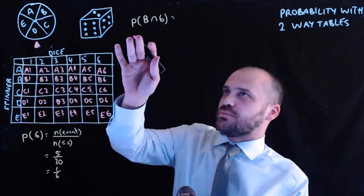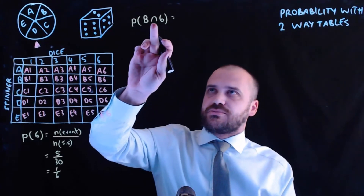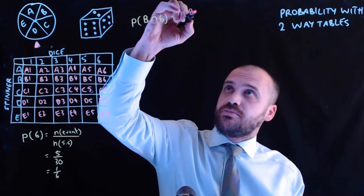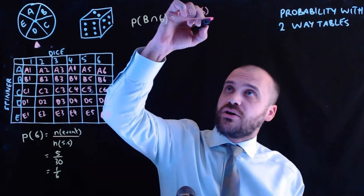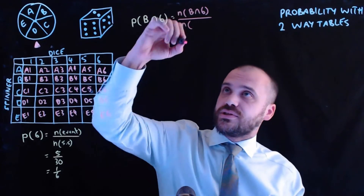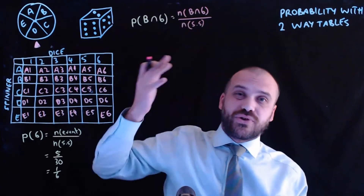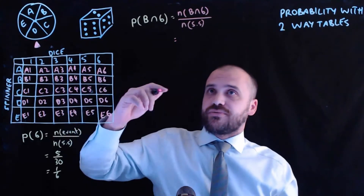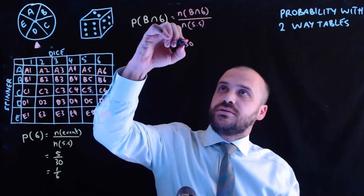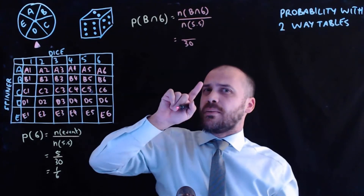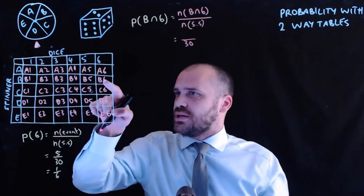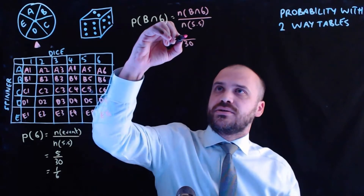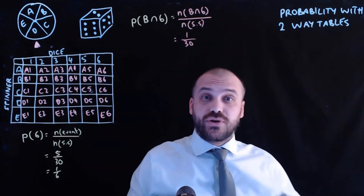Now a more challenging question: the probability of getting a B and a six. Remember, this is the intersection — the 'and'. That's equal to the number of ways to get a B and a six over the size of the sample space. The total is 30, and there's only one way to get a B and a six. So the probability is one out of 30.